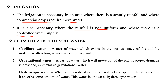Next, we are going to start the classification of soil water. The first one is capillary water. Capillary water is a part of water which exists in the pore spaces of the soil by molecular attraction. Because of this molecular attraction in the pore spaces of the soil, it is known as capillary water.